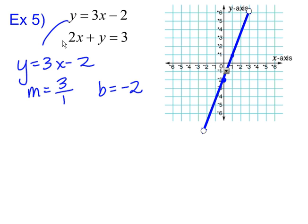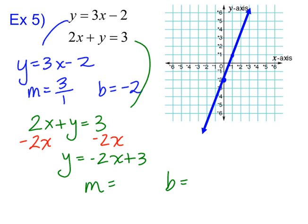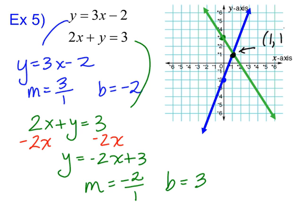Now let's take the second equation: two x plus y equals three. We subtract two x from both sides and get y equals negative two x plus three. The slope is negative two over one, and the y-intercept is positive three. We go to positive three, make our point, then move down two and to the right one — we can see we're going to run into the other line. We draw our line through those points, and the solution to our system of equations is one, one.